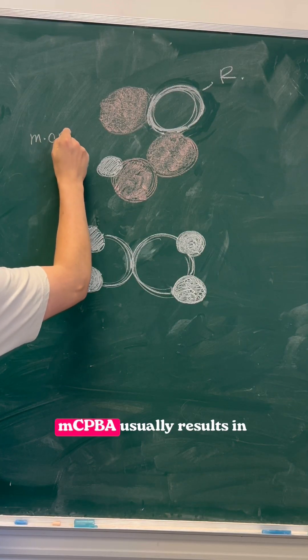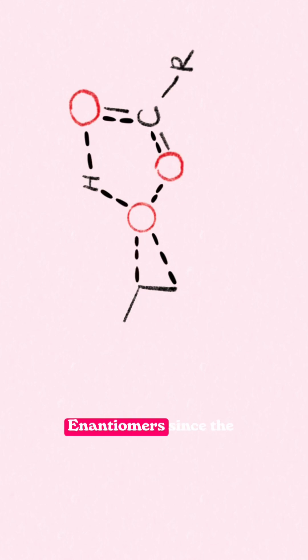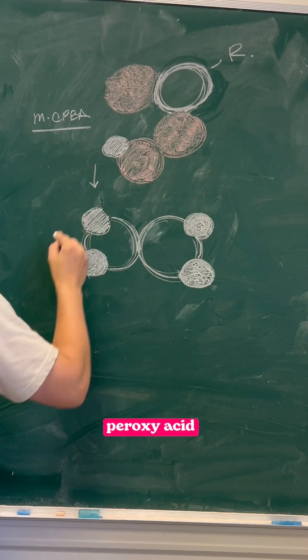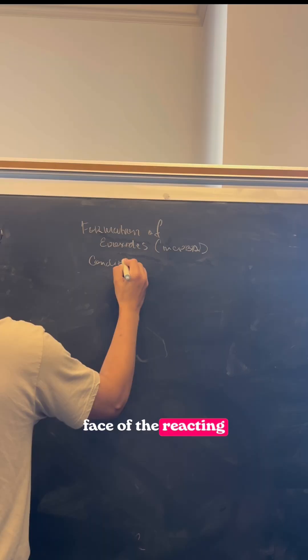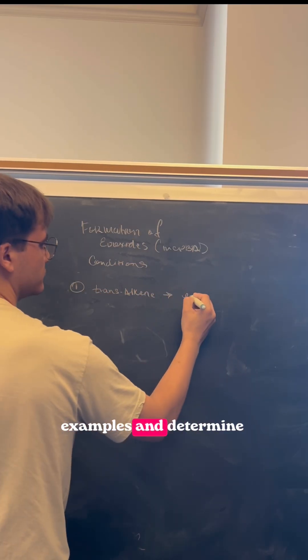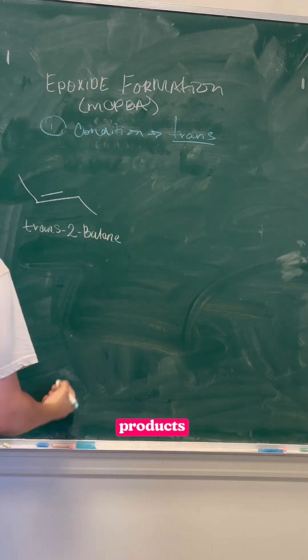Epoxidation with MCPBA usually results in the formation of a pair of enantiomers, since the peroxy acid can react with either face of the reacting alkene. Let's examine three examples and determine the chirality of the products formed.